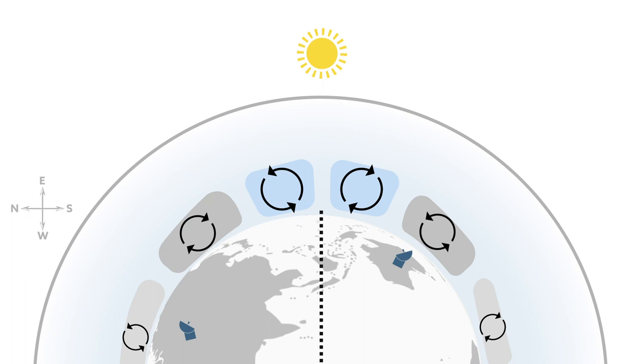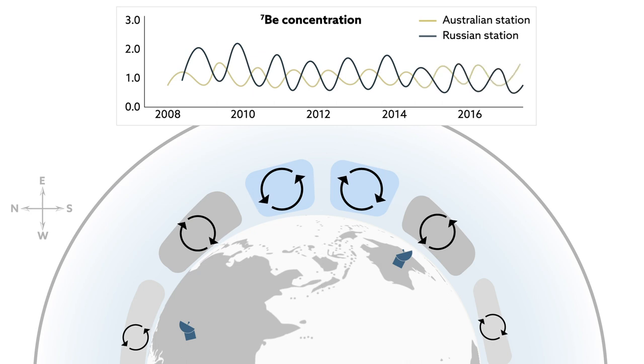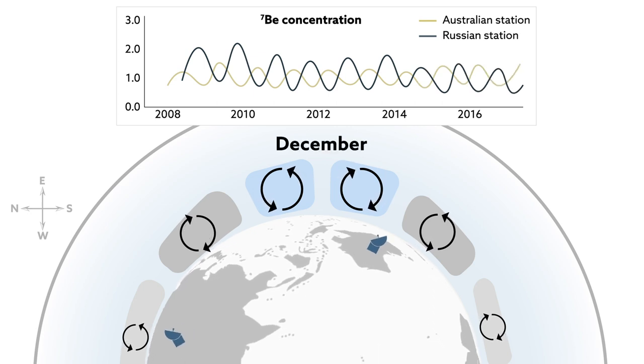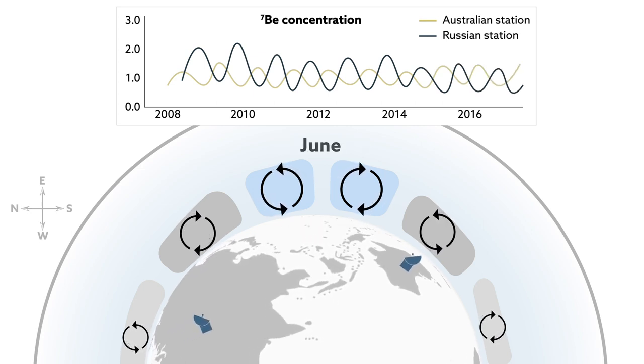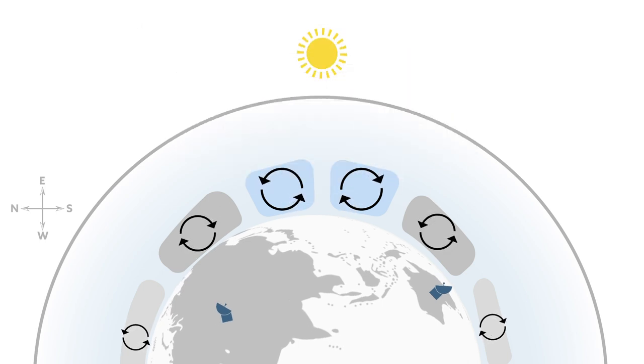It turns out that when these fluctuations are plotted from stations in Russia and Australia, the beryllium-7 concentrations follow opposing trends. When the concentration at one location increases, it decreases at the other. The researchers found that they can predict the start of the monsoon more than seven weeks in advance, with an accuracy of three days.